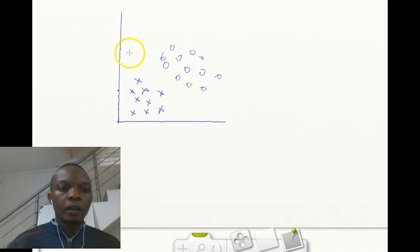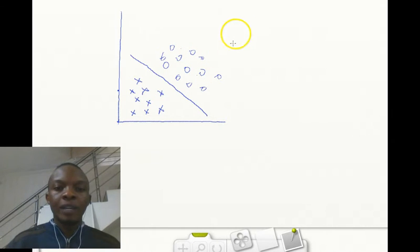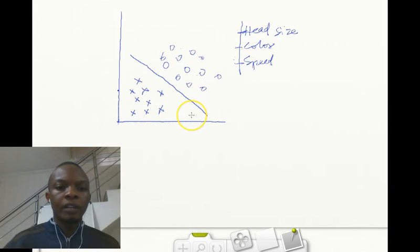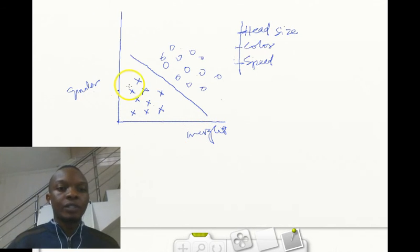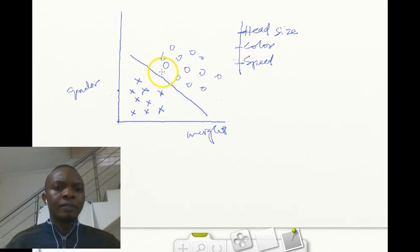That's when we have multiple features. We used two features before, which was gender and weight. But what if we had multiple features like head size, color of skin, speed, and so on? Here we have weight at the bottom and gender on this side - that makes a total of five features. If we had these five features, our graph will look more like this because it will have several different dimensions, not just a two-dimensional graph.